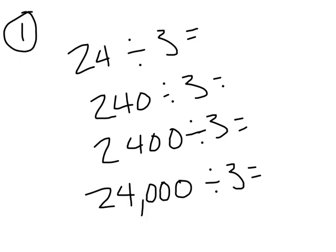First, what's 24 divided by 3? 24 divided by 3 is 8. When I divide 240 divided by 3, I'm dividing 24 tens by 3. How many tens would that be? That would be 8 tens. Write that number in standard form — it's 80.